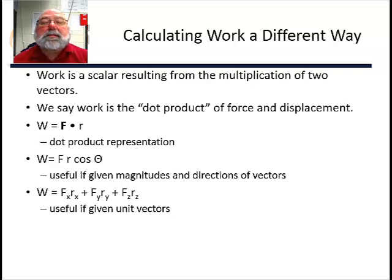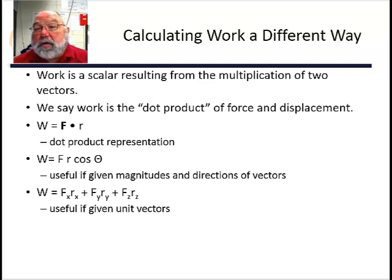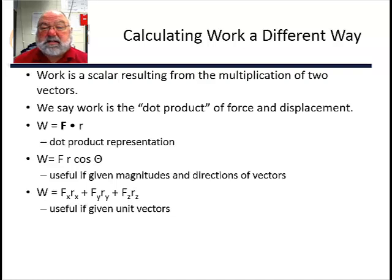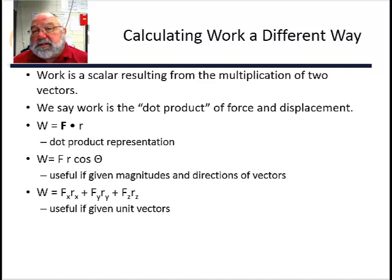Work is a scalar that comes from multiplying two vectors together. There are two ways of multiplying vectors. The first one is the dot product, where you come up with a scalar, and the second one, which we'll use later in the year, is called the cross product, where your product is a vector. Work is the vector force dotted with the vector displacement. One way of calculating that dot product is the magnitude of the force times the magnitude of the displacement times the cosine of the angle between them — that's great if you know the magnitudes and directions. If you have the two vectors in unit vector notation, you probably want to consider using the dot product form where you multiply the components and then add them.